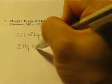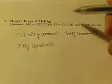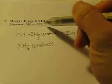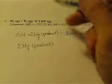So I will calculate the heat of formation of the product first. Here you see we have only one product on the right hand side which is 2HF and it is in gas form.